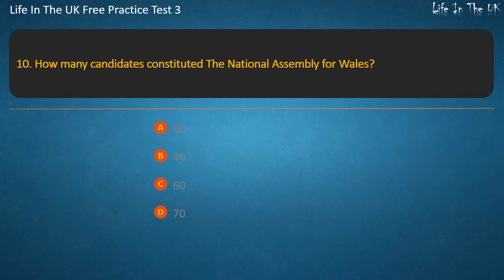Question 10. How many candidates constituted the National Assembly for Wales? 90, 40, 60, or 70? Answer: 60.